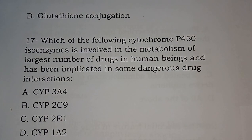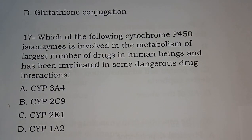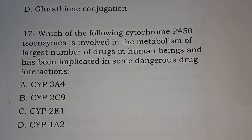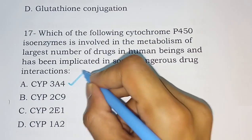Question number seventeen: which of the following cytochrome P450 isoenzymes is involved in the metabolism of the largest number of drugs in human beings and has been implicated in some dangerous drug interactions? Options are: CYP3A4, CYP2C9, CYP2E1, CYP1A2. The correct answer is option A — CYP3A4.